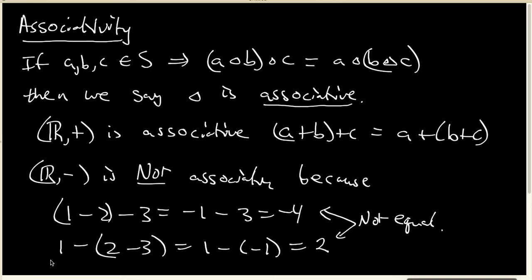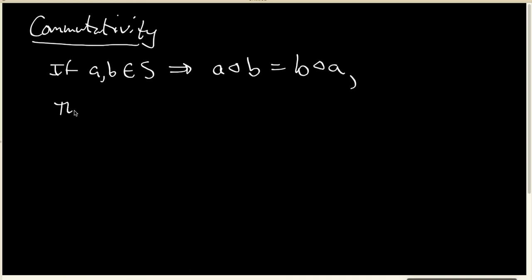The final very basic property that a binary operation might have is commutativity. If I take any pair of objects inside my set, and that implies that A triangle B is the same thing as B triangle A, then we say that triangle is commutative.